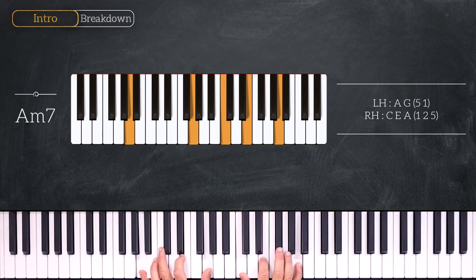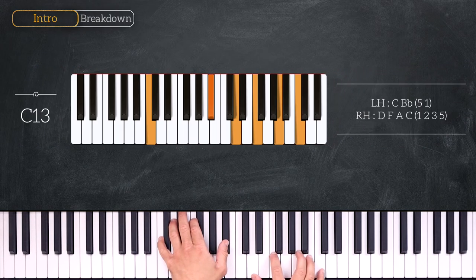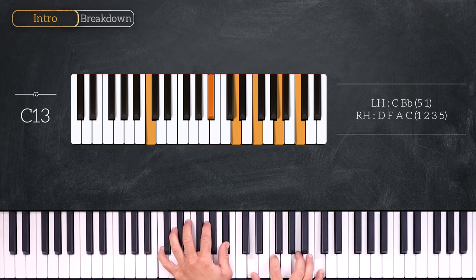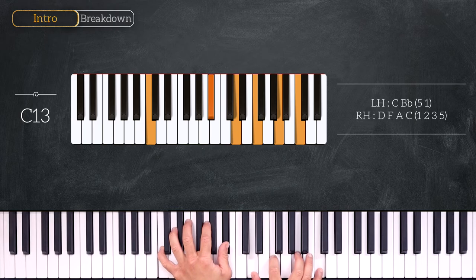Then we'll play this C13. We have C, Bb on the left hand and D, F, A, C on the right. We can also view the right hand as a Dm7.